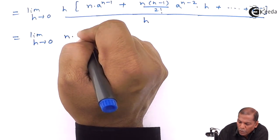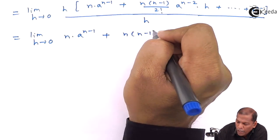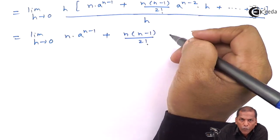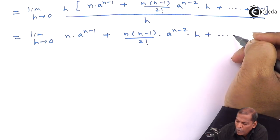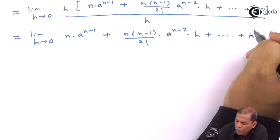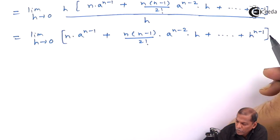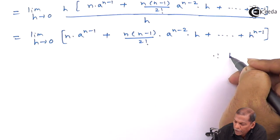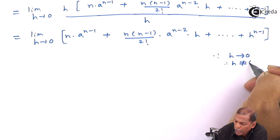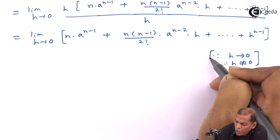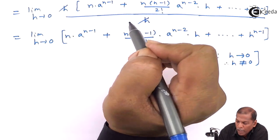Now we cancel h from numerator and denominator. So the next step will be: limit h tends to 0 of n into a raised to n minus 1, plus n(n minus 1) upon 2 factorial into a raised to n minus 2 into h, up to the last term h raised to n minus 1. Note that since h tends to 0, h cannot take the value 0, so cancellation is valid.